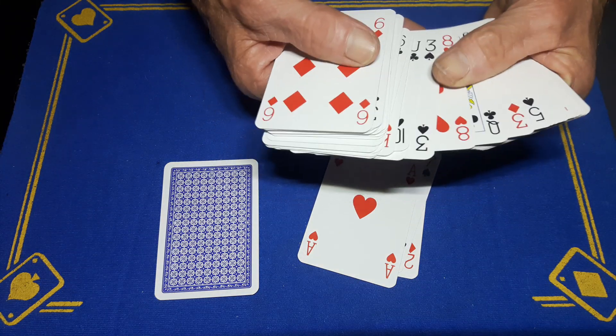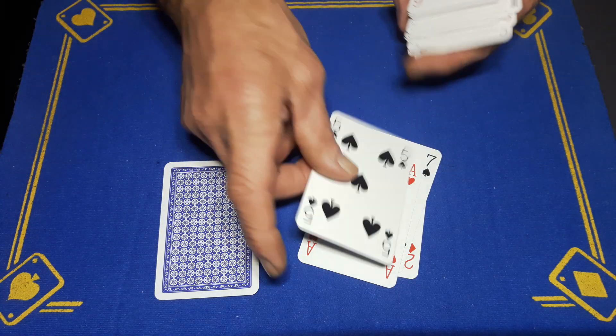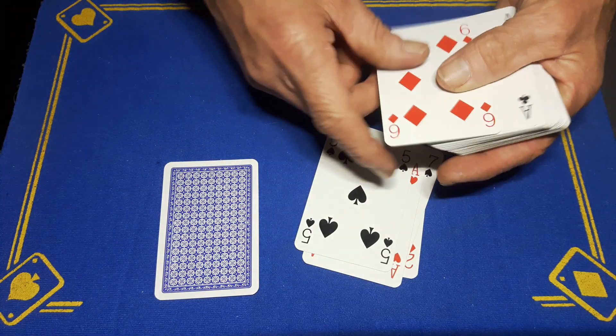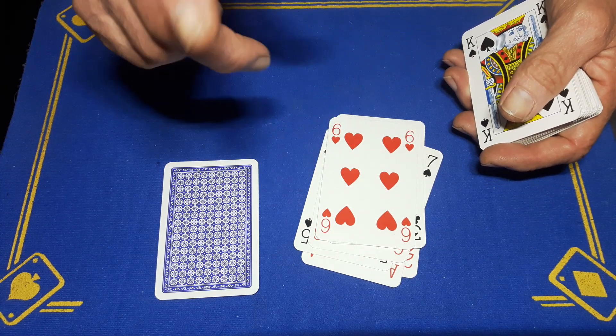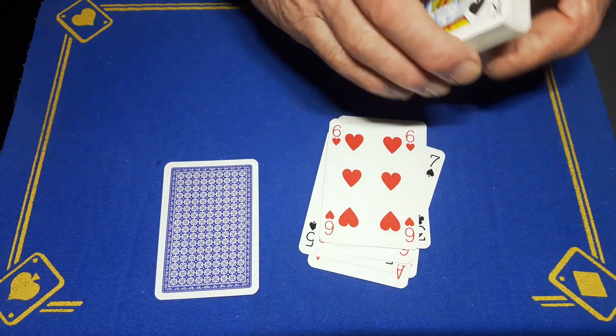So I'll use a five. Say I'm going to place a five there, then you're going to count one, two, three, four, and the spectator's chosen card will end up being the fifth card.